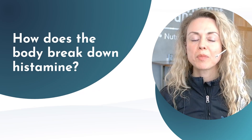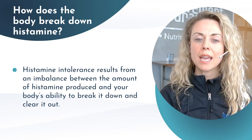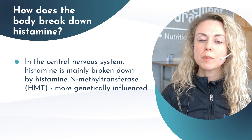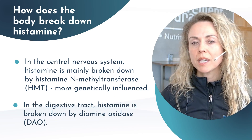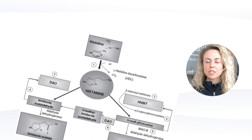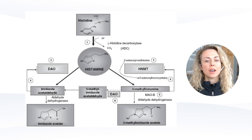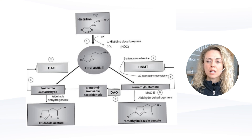How does the body break down histamine? Histamine intolerance results from an imbalance between the amount of histamine produced and the body's ability to break it down. In the central nervous system, histamine is mainly broken down by histamine N-methyltransferase (HNMT), which is more genetically influenced. In the digestive tract, it's mainly broken down by the DAO enzyme — diamine oxidase. For a variety of reasons, our bodies might not produce enough of one or both, creating a histamine intolerance. Histidine is the central amino acid precursor for histamine, broken down via L-histidine decarboxylase, and histamine is then broken down further via DAO or HNMT.